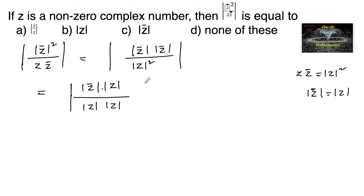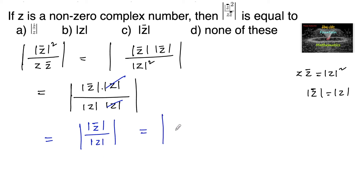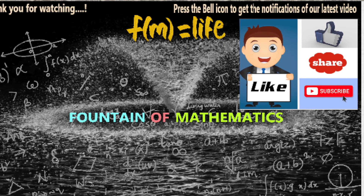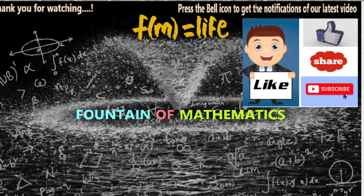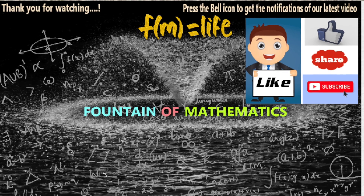We can write |z|² as |z|·|z|, so we cancel one |z|, giving us |z̄| upon |z|, which can also be written as the modulus of z̄/z. This is option A, so option A is the answer. Please like, share, subscribe and support us. Thank you.